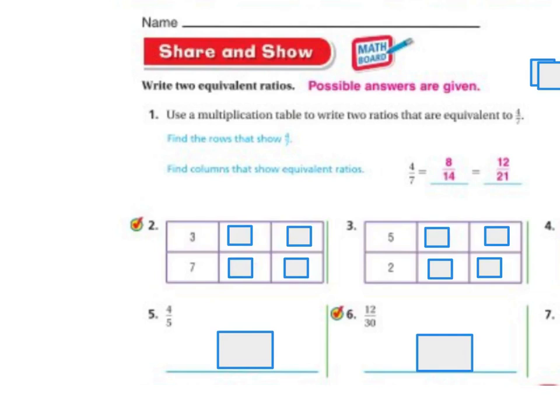Let's do some of these. We have 3 sevenths. If I doubled it, it'd be 6 fourteenths. And then I could also do 9 twenty-firsts. Again, these are simply the multiplication charts. 3, 6, 9. Those are all the multiples. 7, 14, 21. I could keep going. I could do 3 times 4, which is 12, and 4 times 7 is 28. So, I could have done 12 twenty-eighths. I could have kept going.